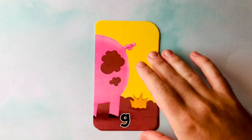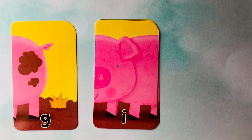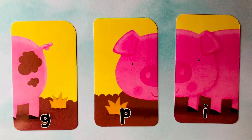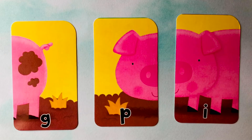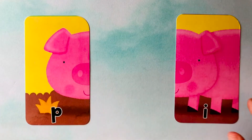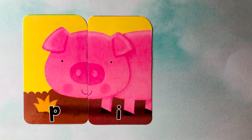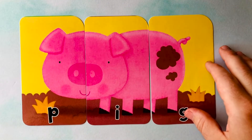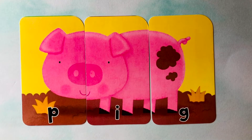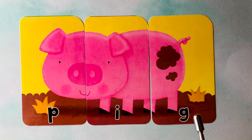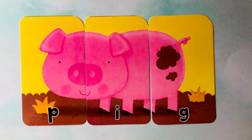Looks like we have a G. An I. And a P. What kind of picture is this? I think it's a pig. Do you know how to spell pig? It starts with a P. In the middle's an I. And it finishes with a G. Pig is spelled P-I-G. P-I-G spells pig. Can you spell it one more time with me? Pig is spelled P-I-G. Awesome job.